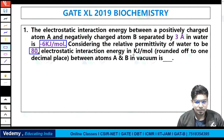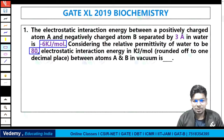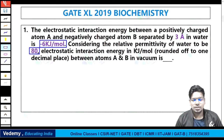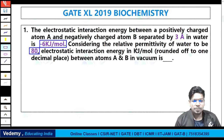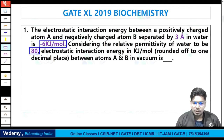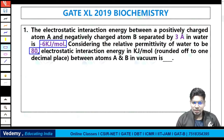To understand this, we need to compare the electricity interaction energy and permittivity in water versus vacuum. Considering the relative permittivity of water is 80, we need to find the electrostatic interaction energy in kilojoule per mole between A and B in vacuum.